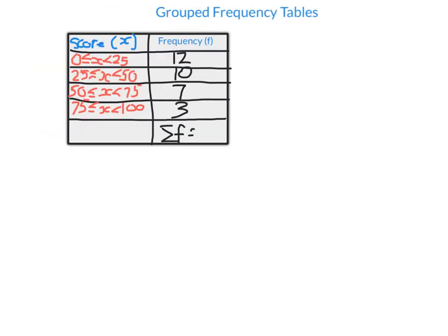Sometimes we have a large range of data. This data goes from 0 to 100, and I don't want to write out a full frequency table listing every score all the way down to 100 — that would take forever. So it's much easier to group the data. Here I've grouped it in groups of 25. Read this as: the score x is between 0 and 25. Note 25 is not included in the first group due to the less-than symbol, but 25 is included in the next group. I've got four groups and the frequency column tells me how many are in each group — 12 in the first group, 10 in the next, and so on.